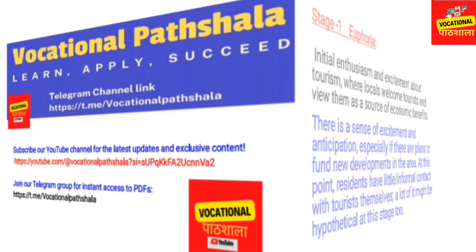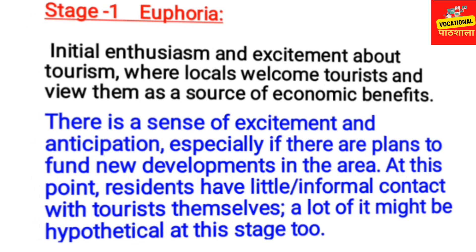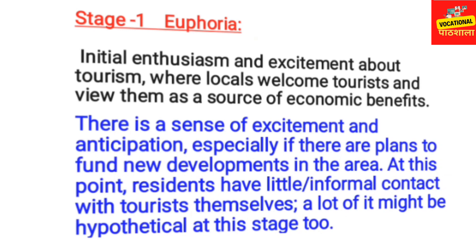Euphoria is the initial enthusiasm and excitement about tourism, where locals welcome tourists and view them as a source of economic income. When tourism starts in an area, local communities are excited — they anticipate income generation from tourists. There is a sense of anticipation, especially if there are plans to fund new developments. At this point, residents have little formal contact with tourists, so it is still a hypothetical and positive stage.